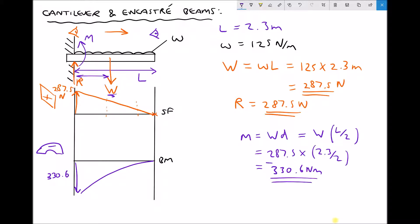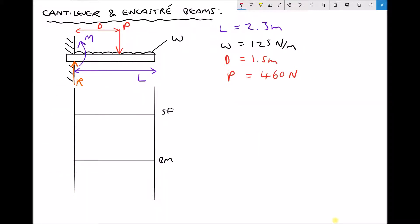Now let's add a point load to our cantilever and see how that impacts calculations. We've added a point load P at a distance D from the support, where P equals 460 newtons and D equals 1.5 metres. The process is the same — first find the support reaction. R must equal the weight plus the point load: 125 times 2.3 plus 460, giving a support reaction of 747.5 newtons.